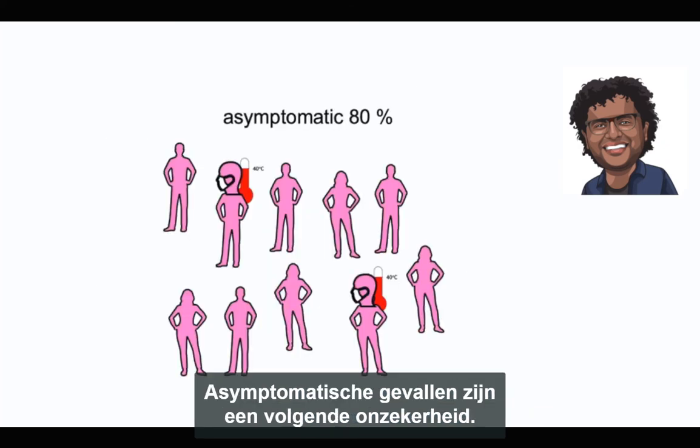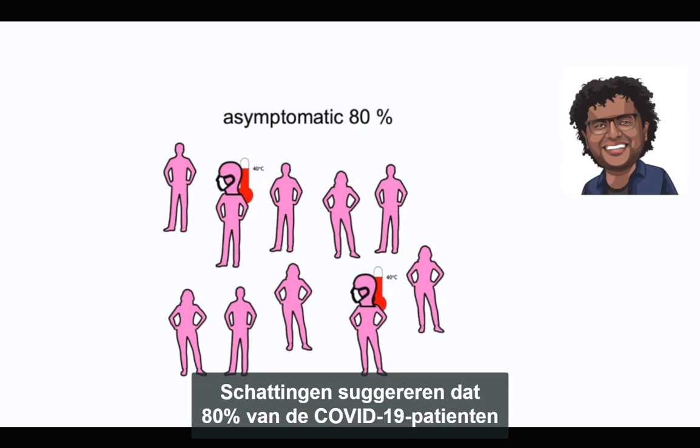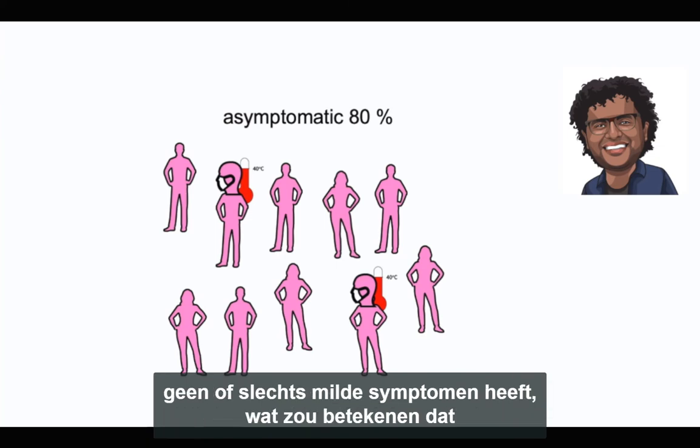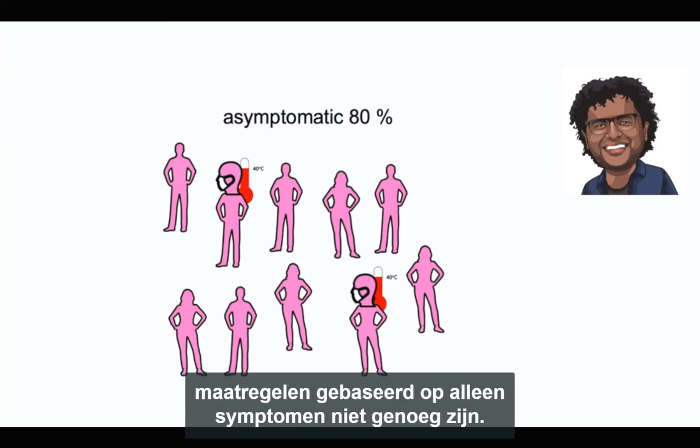Asymptomatic cases are another uncertainty. Estimates suggest that 80% of COVID-19 cases are mild or asymptomatic, implying that symptom-based control is not enough.